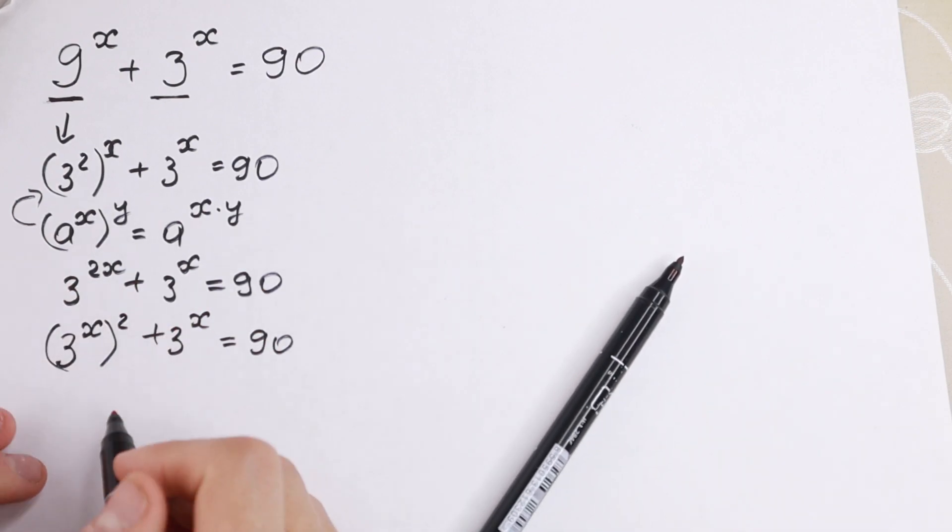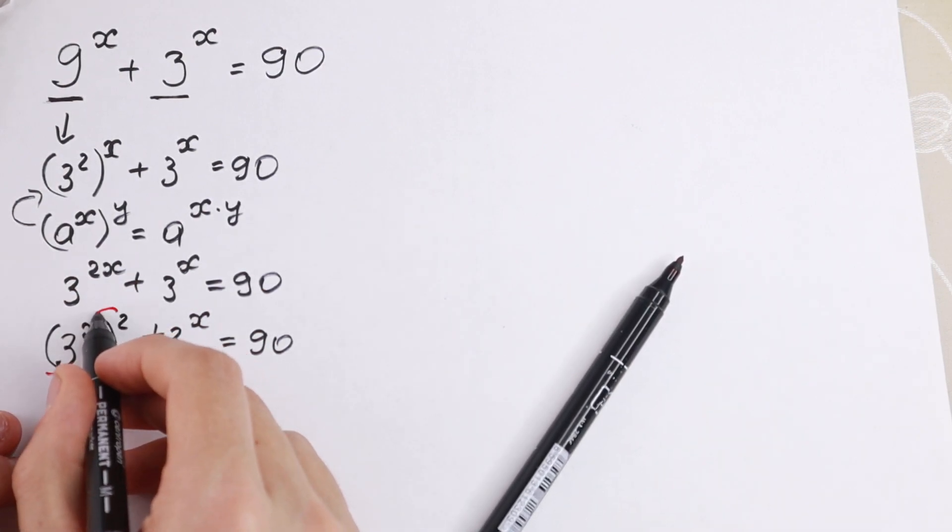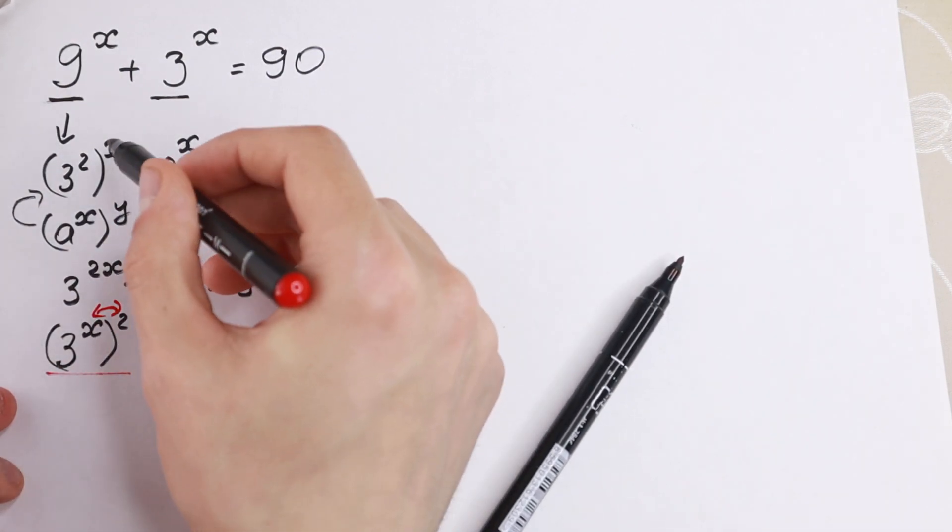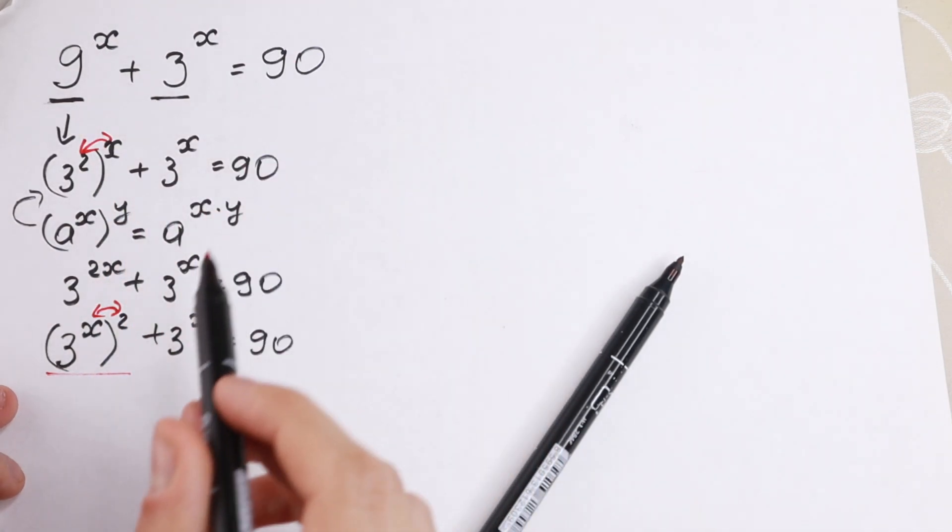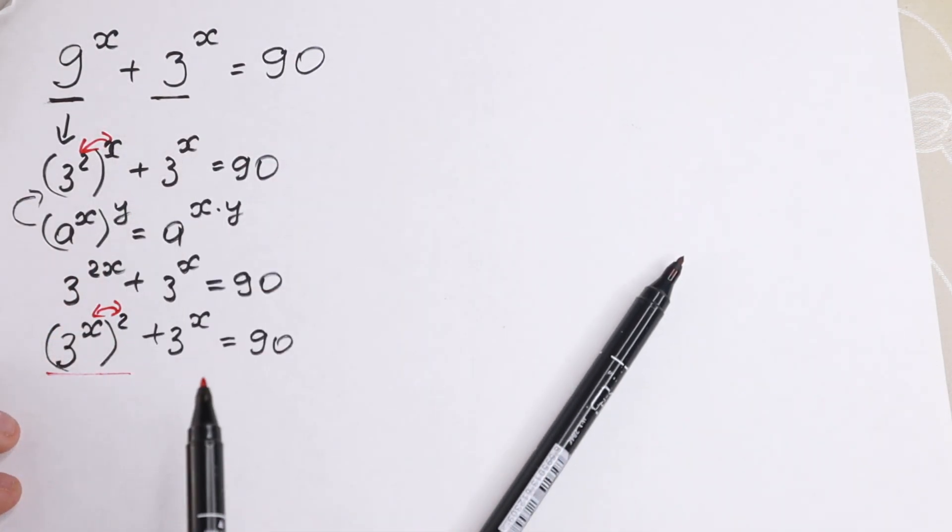So learn this rule or remember this rule. So we can swap these two elements. This one and right here this one. If you know this rule you don't need these steps but you can swap this. So remember this or learn this.